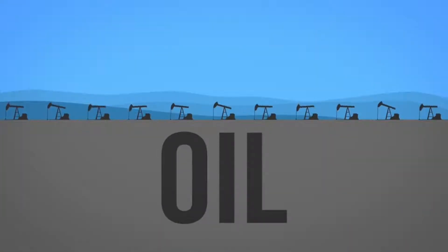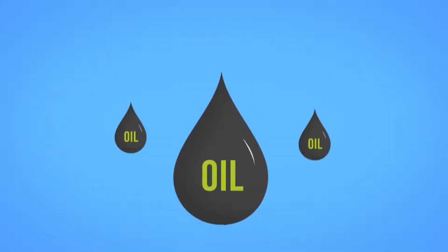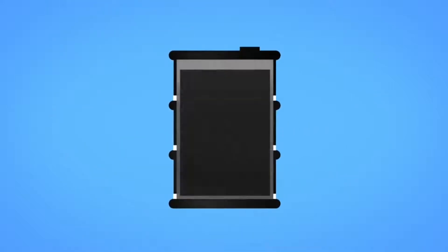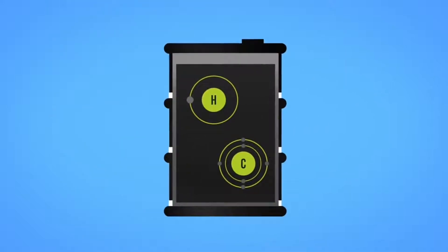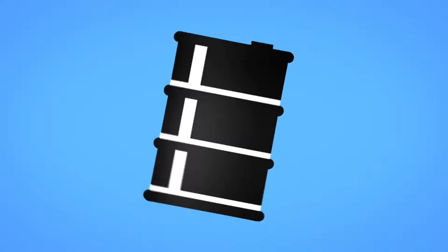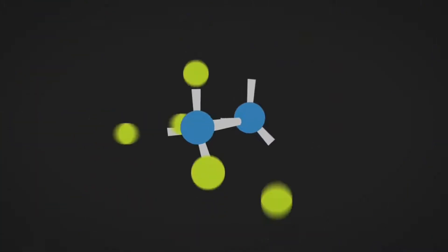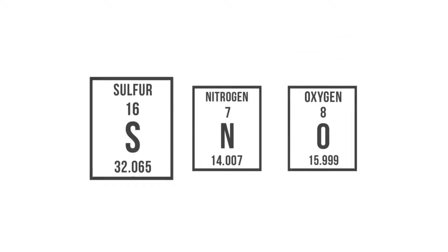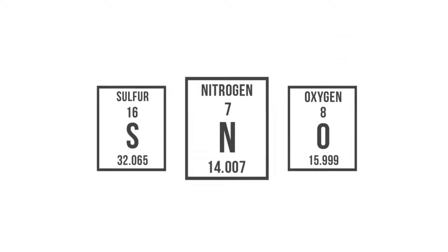Oil, otherwise known as petroleum or crude, is a thick black liquid composed primarily of hydrogen and carbon. The physical properties of oil, such as its thickness, vary greatly depending on the specific combination of hydrocarbon molecules. Oil also contains trace elements of sulfur, nitrogen, and oxygen.